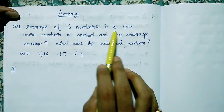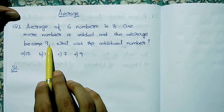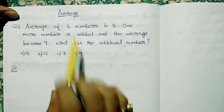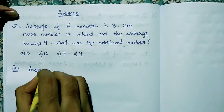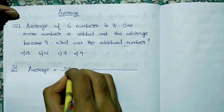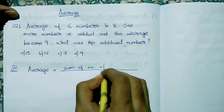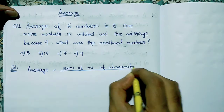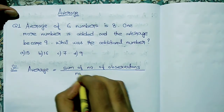We will add the number of average to 8, and then to 9, and we will add an additional number. The average formula is: average is equal to sum of numbers divided by number of observations.